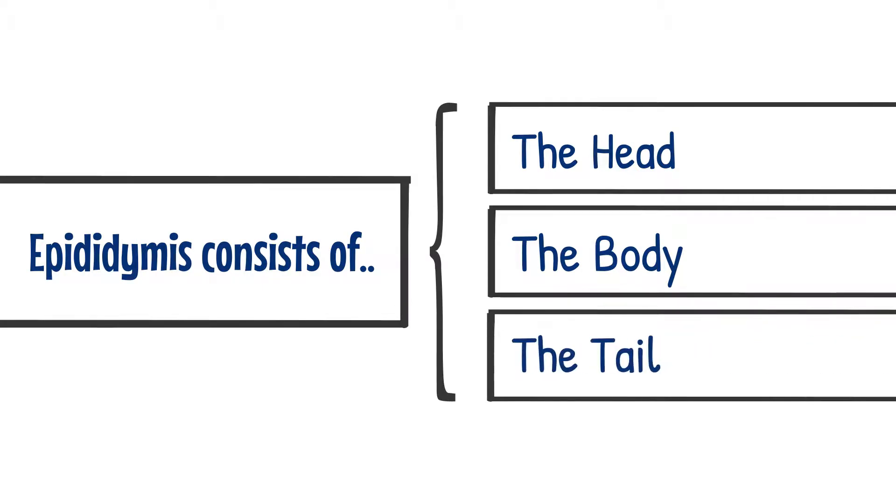Last is the tail, which connects the vas deferens. From here, the sperm is transported to the ejaculatory duct and out of the body.